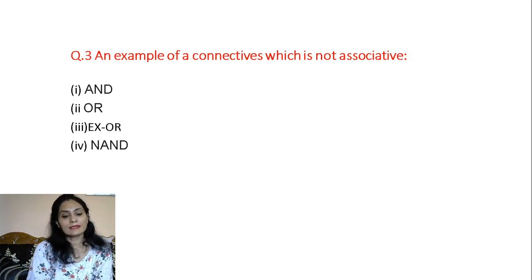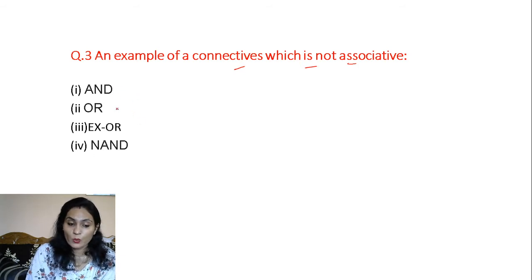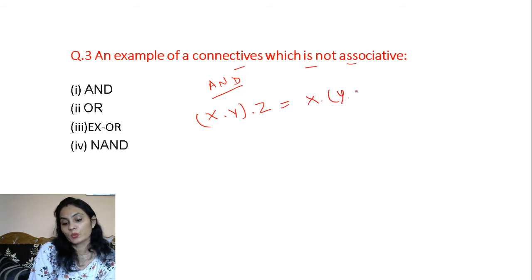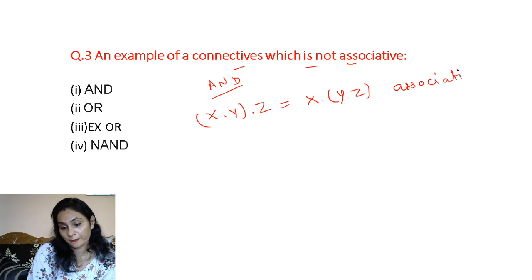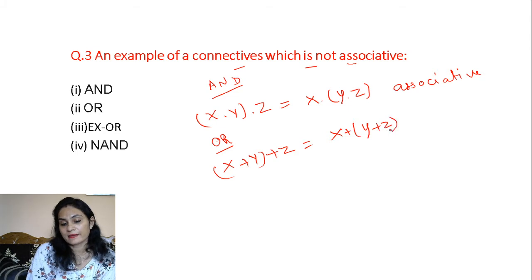This is our next question: an example of a connective which is not associative. You have to find out from: AND, OR, EXOR, or NAND. For AND, if we have x·y·z, the left-hand side and right-hand side grouping give the same result — it means AND follows the associative property. Similarly, for OR, x+(y+z) equals (x+y)+z, so left-hand side and right-hand side are the same; no problem there.